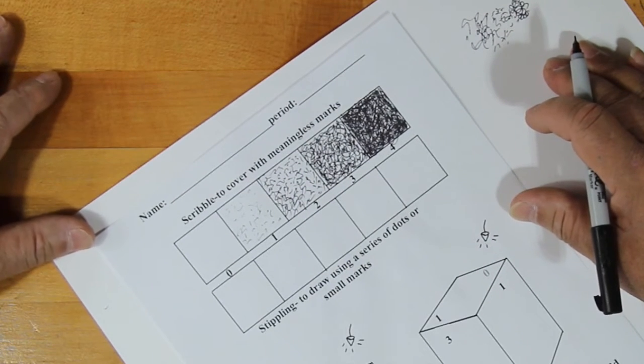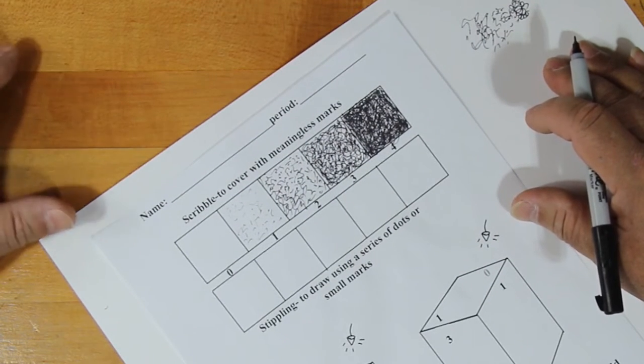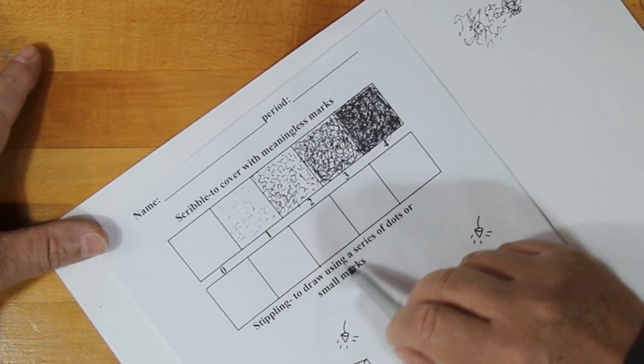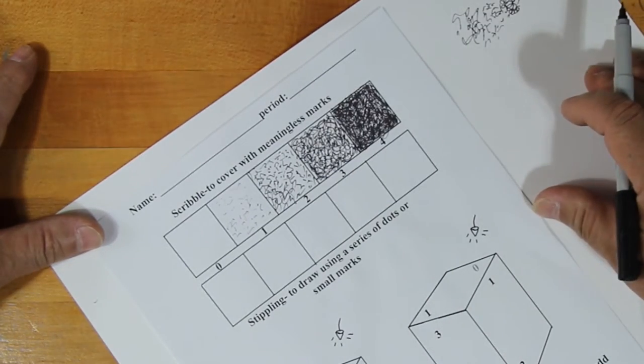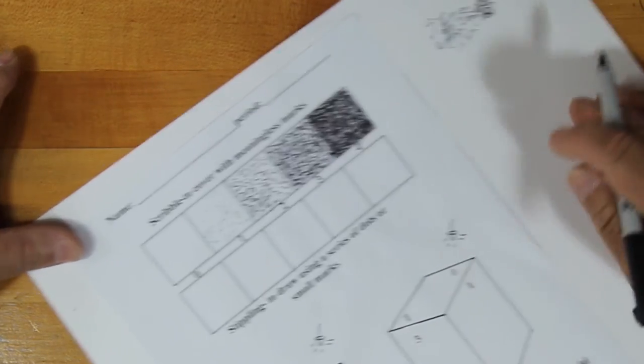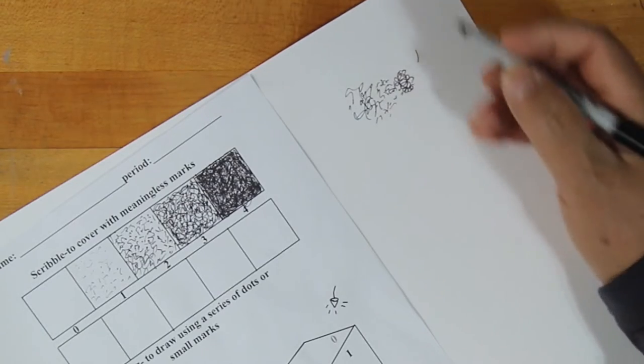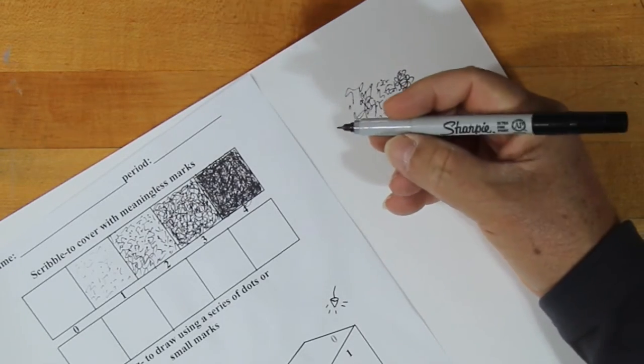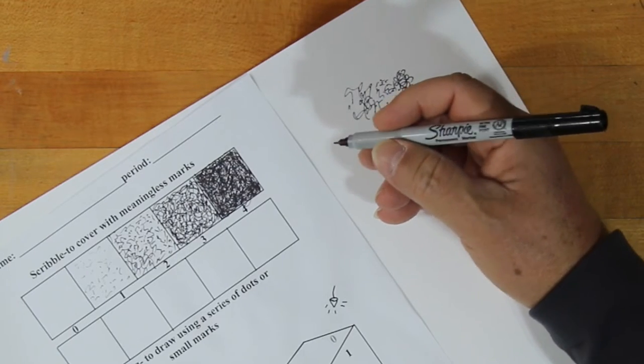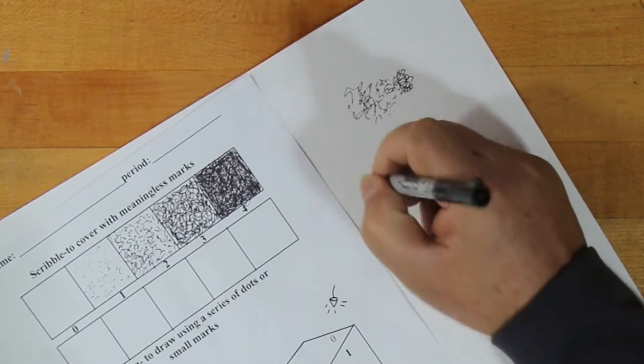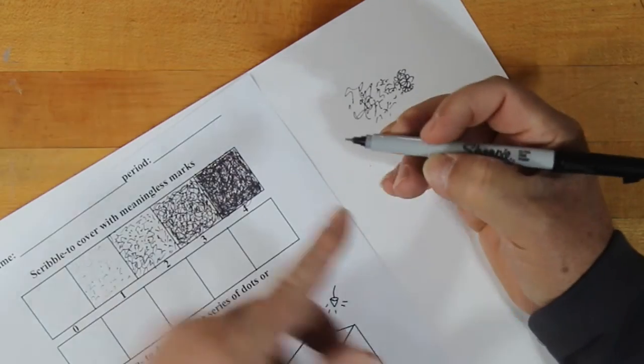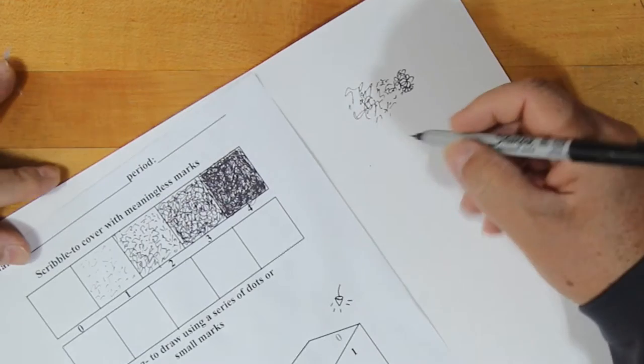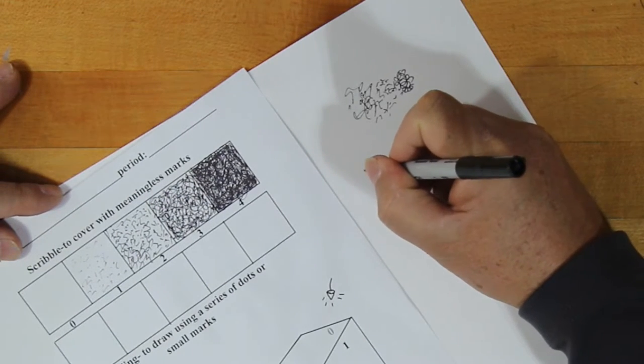The second one is also very easy, but it is much more time consuming. And this is called stippling. And stippling is nothing more than drawing with a series of dots or small marks. We're going to try to use dots. When we are doing the dots, a couple of things. We're going to be using the Sharpie 0.5 lead. Don't tap. If you start tapping like this, you're going to crack the tip. And then it's going to splatter and make a mess. So you're not tapping, you're just pressing.